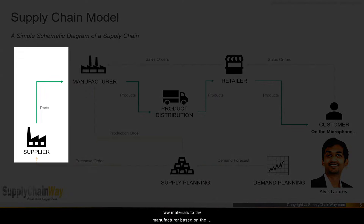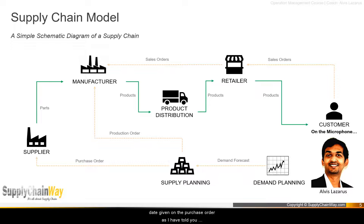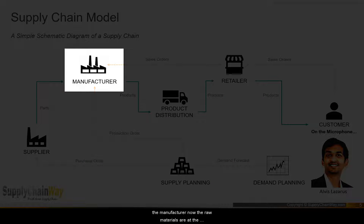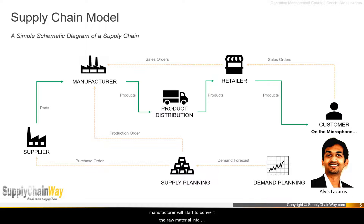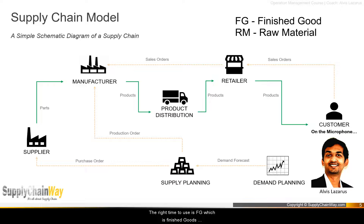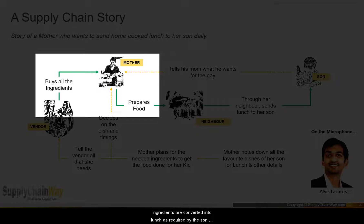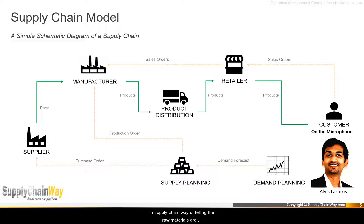Based on the purchase order, the supplier ships those raw materials to the manufacturer by the dates specified. Once the raw materials arrive at the manufacturing facility, the manufacturer — based on the production order — begins converting them into finished goods, abbreviated as FG. The manufacturing facility is the place where raw materials are converted into the finished product in the form and shape required by the customer.